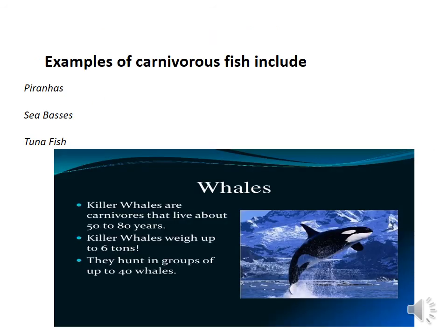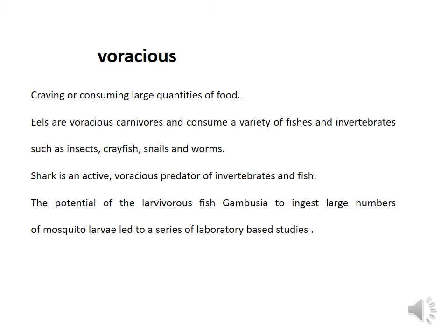Examples of carnivorous fish include piranha, sea bass, and tuna fish. Killer whales are carnivorous species that live about 50 to 80 years, weigh up to 6 tons, and hunt in groups of up to 40 whales. Some fishes are voracious feeders — voracious means those fishes which crave consuming large quantities of food. Eels are voracious carnivores and consume a variety of fishes and invertebrates such as insects, crayfish, snails, and worms. Sharks are active voracious predators of invertebrates and fish. Gambusia is also called a voracious feeder due to its potential to ingest a large number of mosquito larvae.